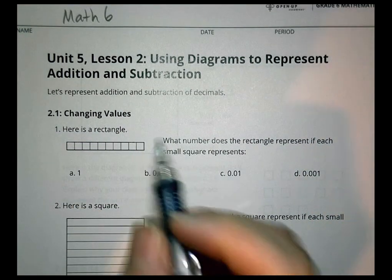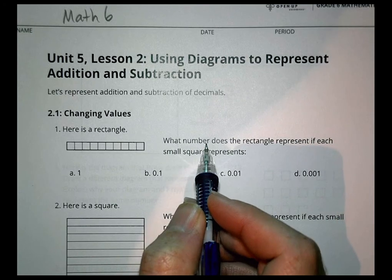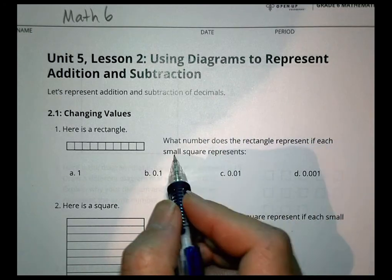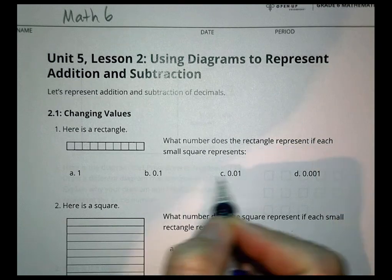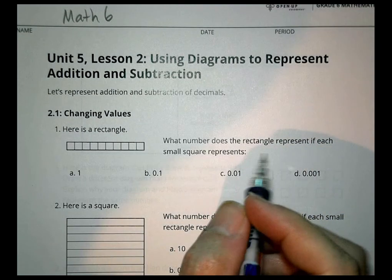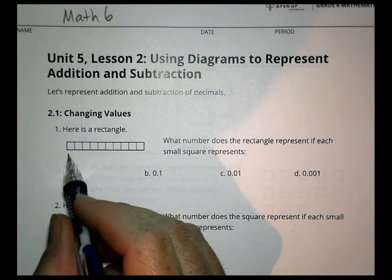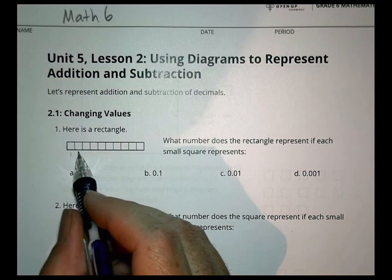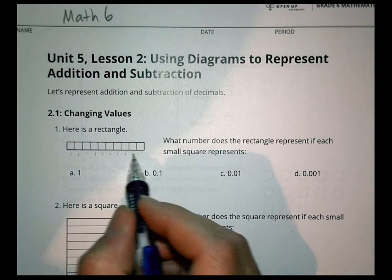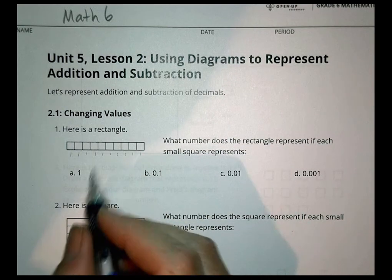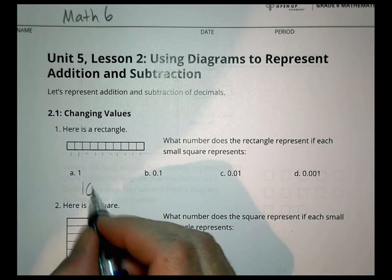Let's look at the first one — it says 'changing values.' Here's a rectangle. What number does the rectangle represent if each small square represents one, one-tenth, one-hundredth, or one-thousandth? If each small square has a value of one, we count ten of them, so the whole rectangle would be ten.